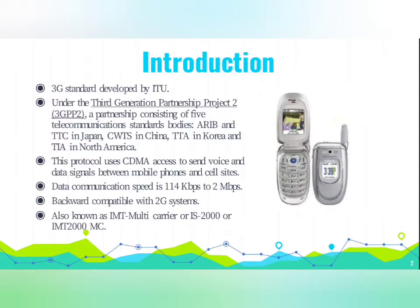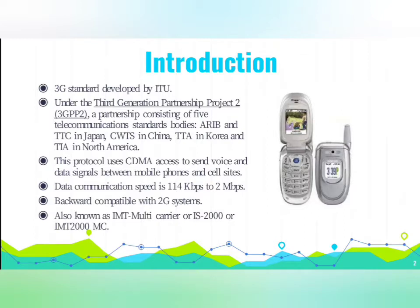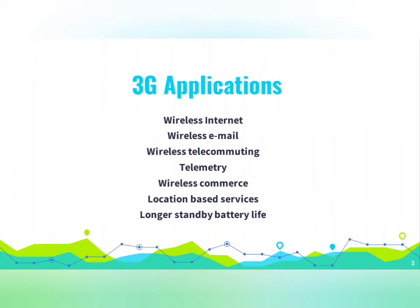Code Division Multiple Access 2000 is a third generation standard developed by ITU. This protocol uses CDMA access to send voice and data signals between mobile phones and cell sites. It is developed under the project 3GPP2, a partnership consisting of five telecommunications standards bodies. Data communication speeds ranging from 114 kilobits per second to 2 megabits per second are supported. CDMA 2000 is unique in that it supports 3G services and enables a logical migration from existing 2G platforms to 3G without disturbing the legacy system. CDMA 2000 is also known as IMT multi-carrier, IS2000, or IMT2000MC.